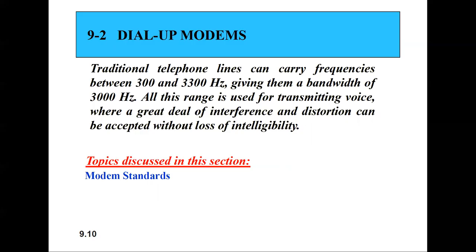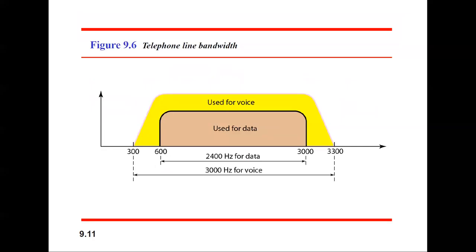Traditional telephones can carry frequencies between 300 and 3,300 hertz. This range is used for transmitting voice, where a great deal of interference and distortion can be accepted without loss of intelligibility. The range denoted in white is used for voice, while the range used for data is denoted as brown, starting from 600 to 3000 hertz.